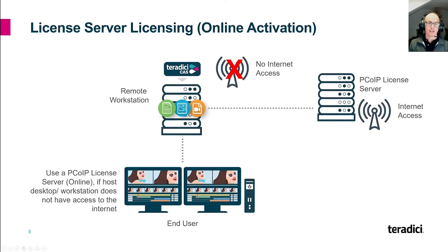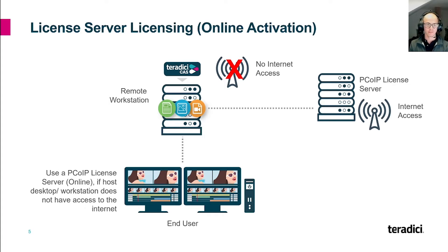Now let's see how the local licensing works. We will look at the online activation method. For this method, you have to set up another virtual machine in your environment based on CentOS 7 or 8. Once you've installed this machine, you can install the Teradigi License Manager software.